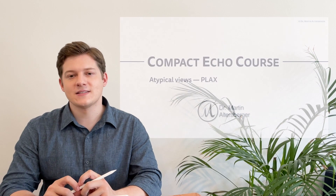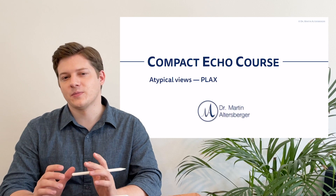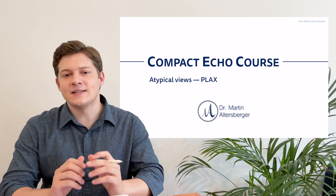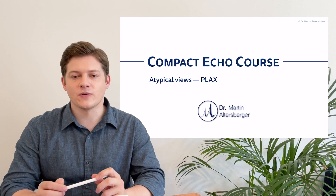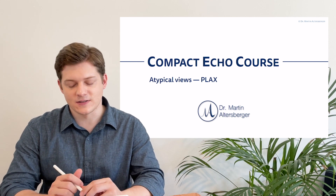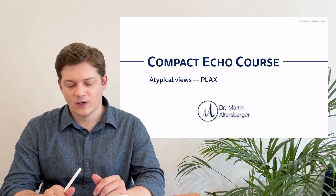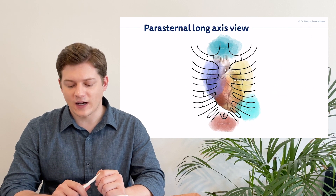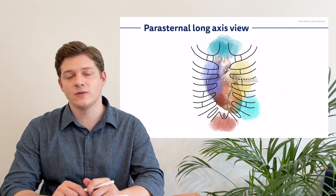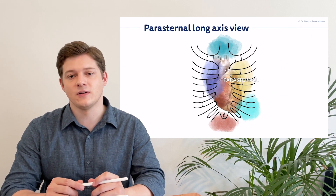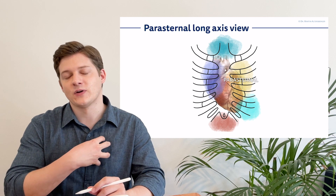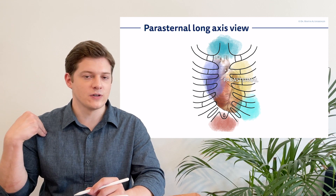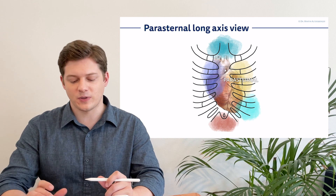In this last video about the parasternal long axis view, we'll talk about atypical views of the parasternal long axis. What are atypical views? We discussed already the normal views of the parasternal long axis — you are located on the left side of the sternum, the marker pointing to the right shoulder of the patient.